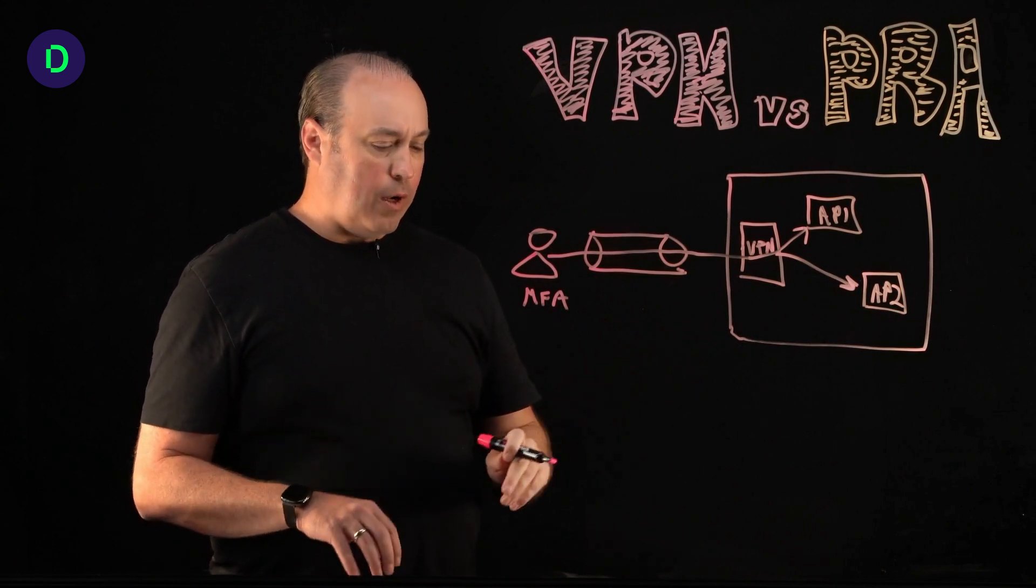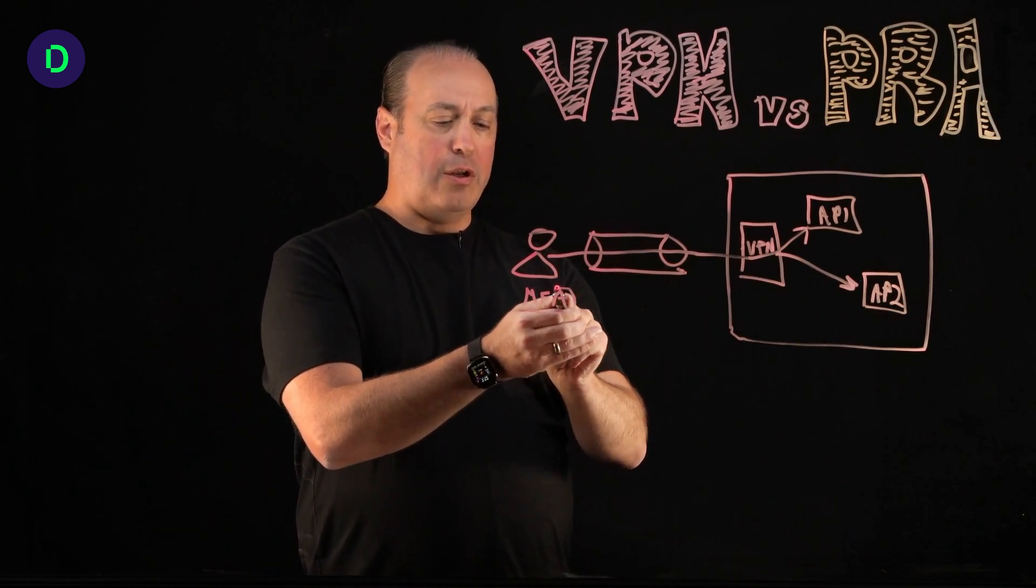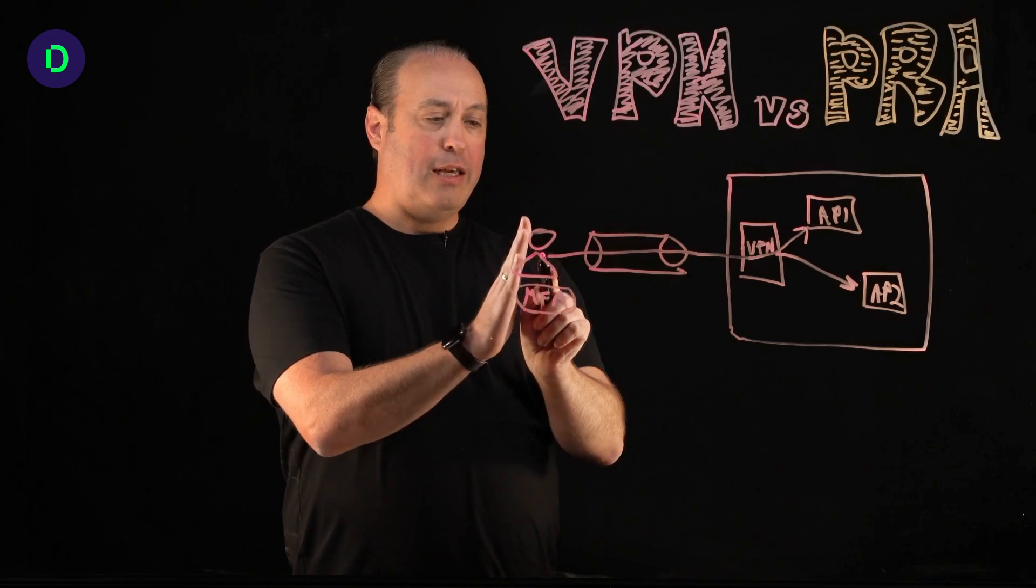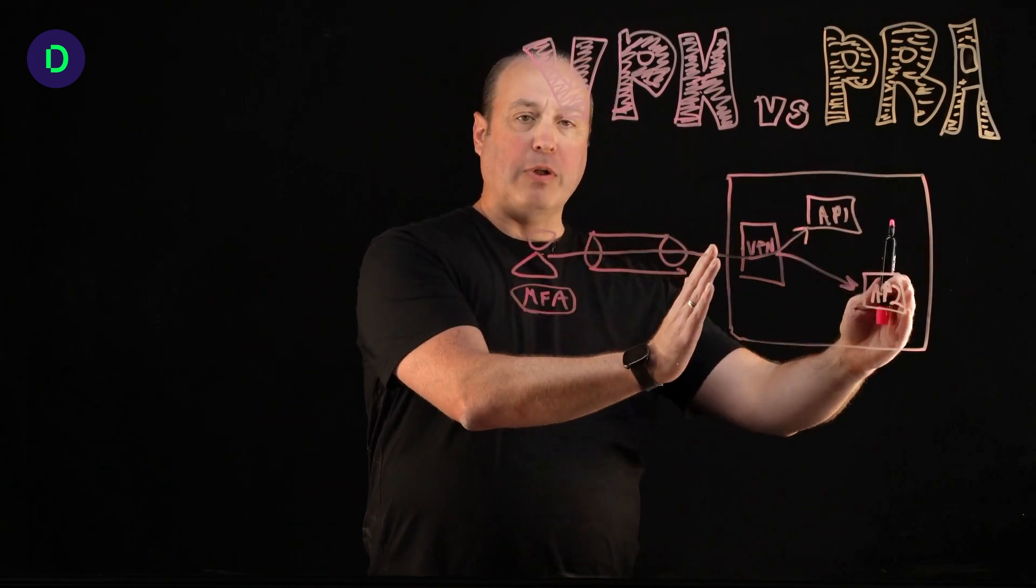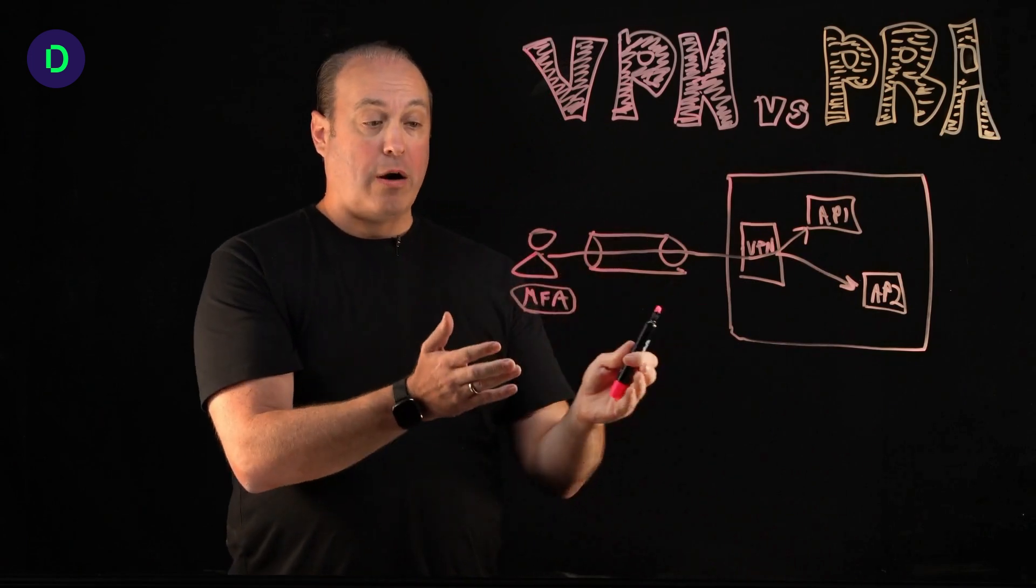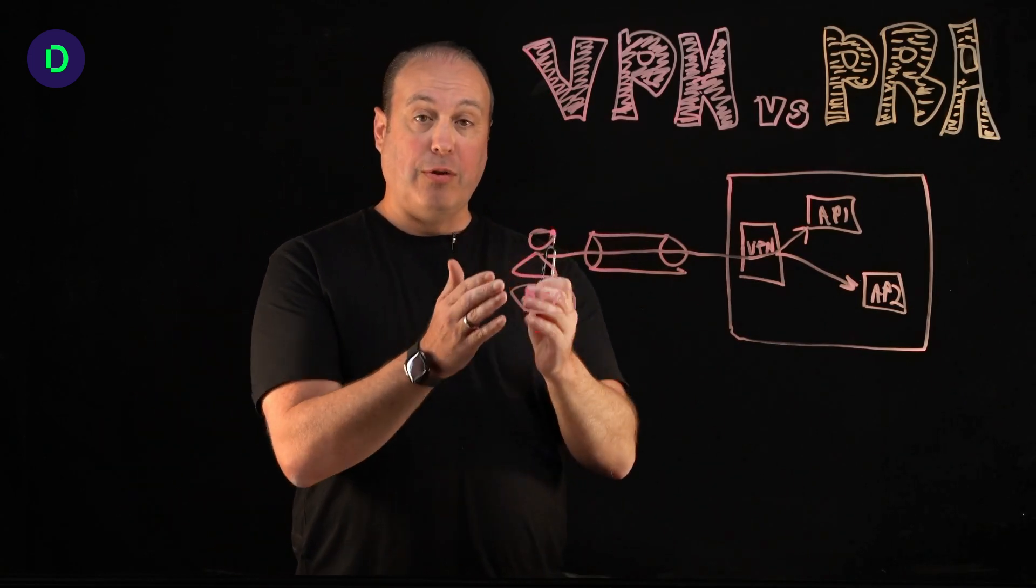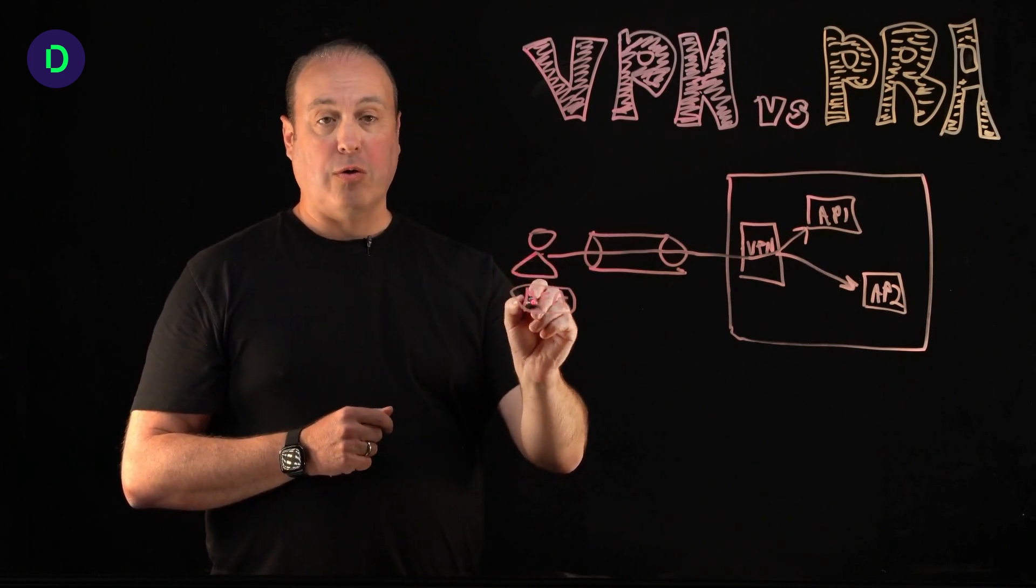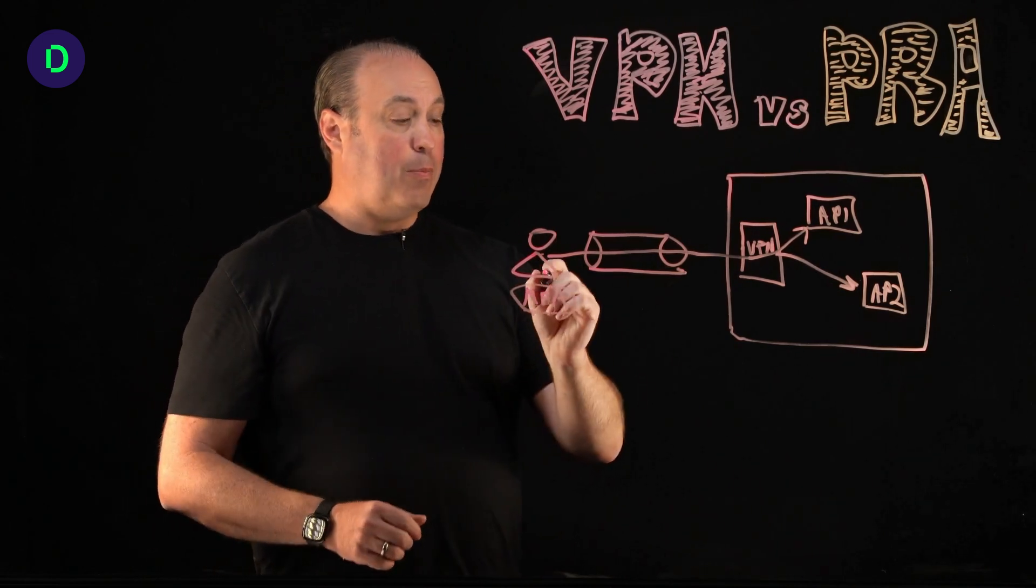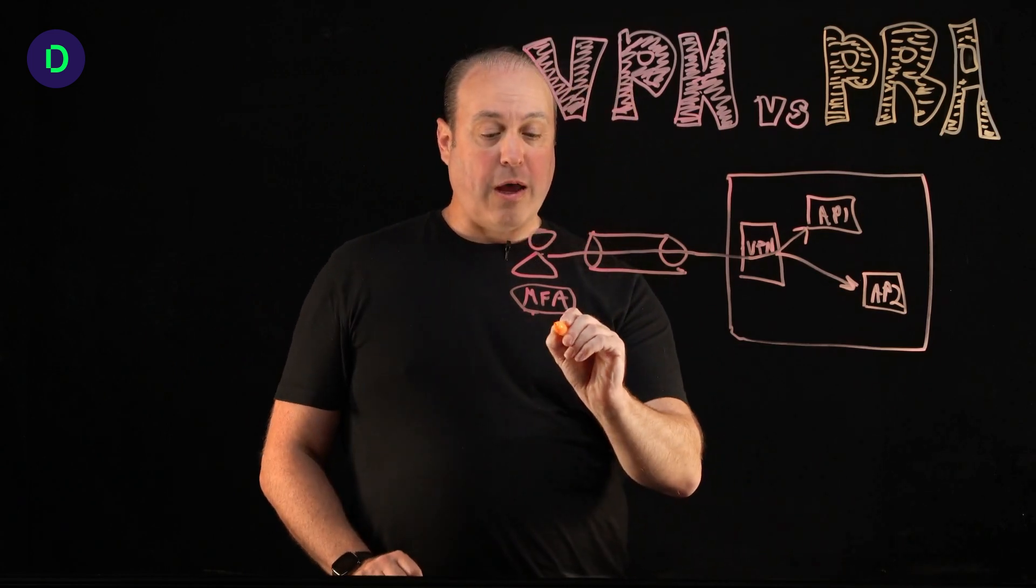All right, so what's wrong with that? Well, the challenge is once this person authenticates here, then over here, the network and the applications are generally unaware of this person, whether it is this person, whether it's still that same legitimate user. And if this person's credentials are stolen or compromised, then the bad guy can actually get into the organization through the same way.